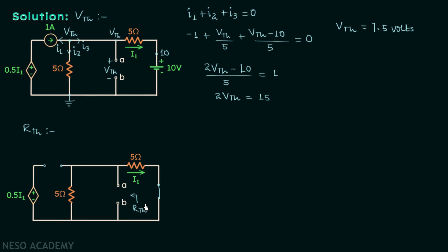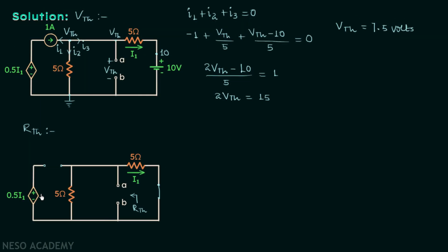When calculating Rth with a dependent source present, we would normally connect a test current or voltage source between the two terminals. However, we only do this when the dependent source is actually involved in the calculation. In this case, the dependent source is not getting involved while calculating Rth, so Rth is simply equal to 5 ohms in parallel with 5 ohms.